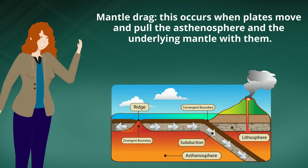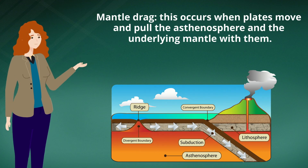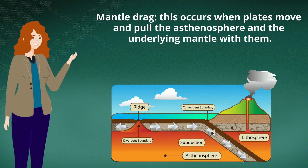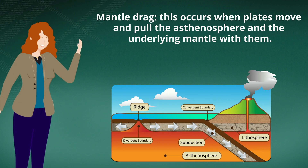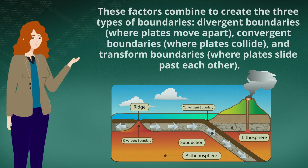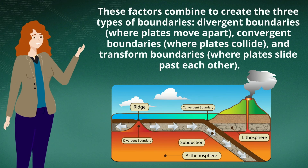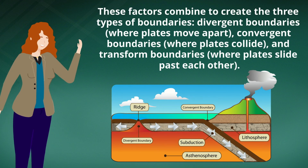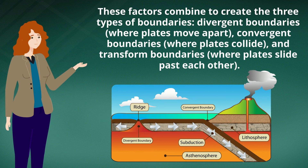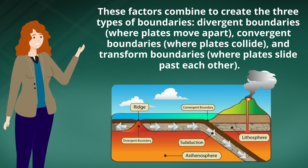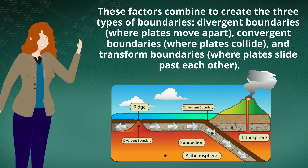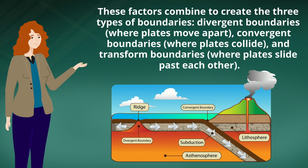Mantle drag occurs when plates move and pull the asthenosphere and the underlying mantle with them. These factors combine to create the three types of boundaries: divergent boundaries, convergent boundaries, and transform boundaries.